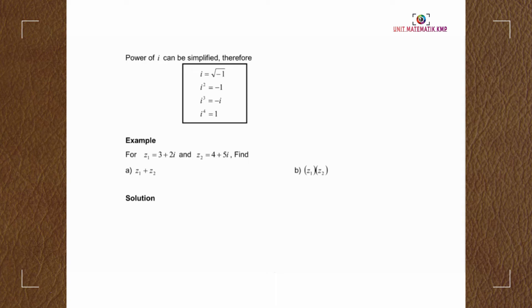Now, look at the example. Given z1 and z2 as complex numbers, find z1 plus z2. z1 is given as 3 plus 2i and z2 as 4 plus 5i.